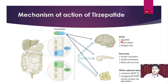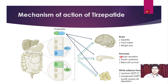In the brain, Tirzepatide decreases appetite, decreases food intake, and increases weight loss. In the pancreas, it increases insulin secretion, increases insulin synthesis, and increases beta cell survival. In the adipose tissue, which is very important in obesity and diabetes patients, it increases lipolysis via GLP-1, increases lipogenesis via GIP, and avoids ectopic fat deposition.